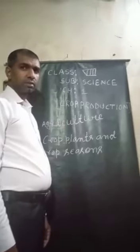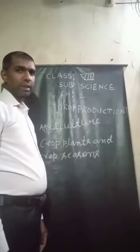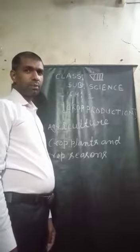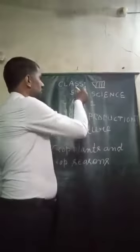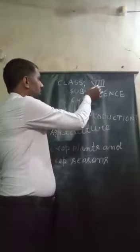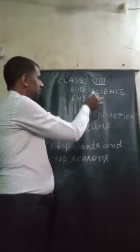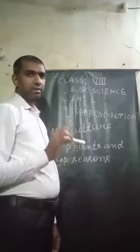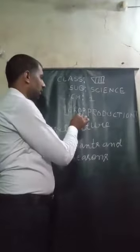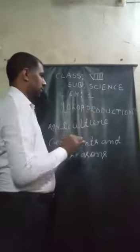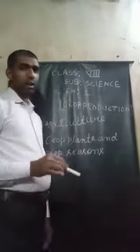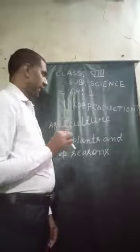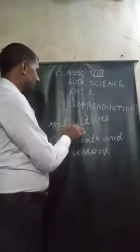Hello students, welcome to online classes from KV Rai Academy. I am Arun Pandey. I am going to discuss Class 8, subject science, Chapter 1. The name of the chapter is Crop Production, and inside Chapter 1, I am going to describe about agriculture.